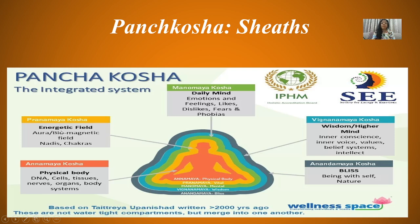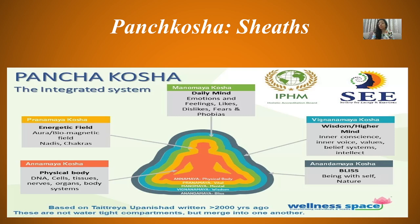Pranamaya Kosh is about energy and the vital sheet, like nadis and chakras. Manomaya Kosh relates to the daily mind — emotions, feelings, likes, dislikes, fears, phobias. These are all in our inner conscience, our inner voice, our mood, our faith, our buddhi. When we are connected to our nature and spiritual bliss, we will be in a state of super spiritual bliss.